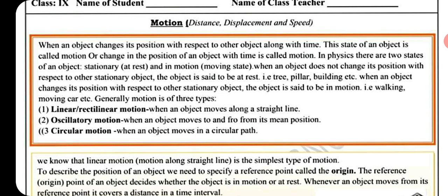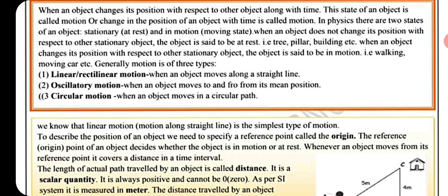Examples of motion include walking and a moving car. Generally, motion is of three types: linear or rectilinear motion, when an object moves along a straight line; and oscillatory motion, when an object moves to and fro.